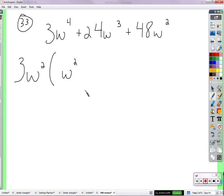If you want to make sure that you get this correct, just distribute this back to w squared. Make sure you get 3w to the fourth, and 8 plus 8w. Plus 8w. To the, yeah. That's right.